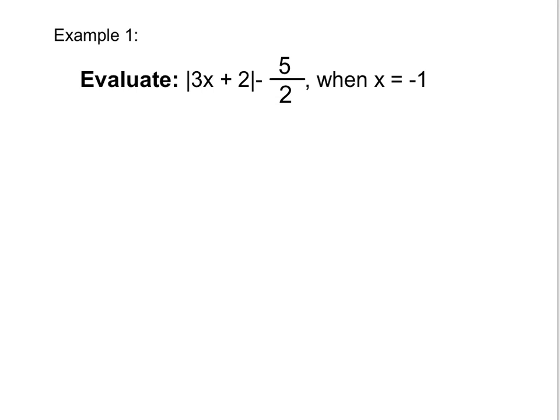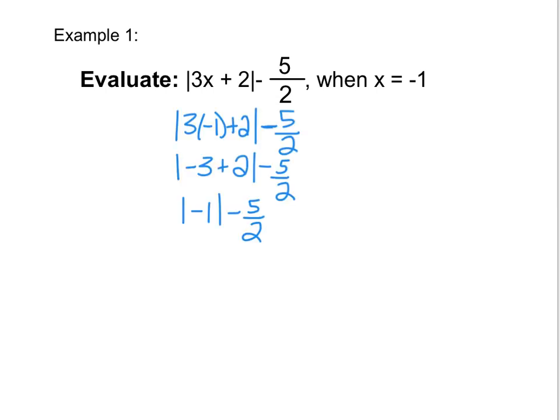In this case, we're told that x equals negative 1, so I'll start by substituting that in. Now that I've simplified everything inside my absolute value, I have the absolute value of negative 1, which I know is 1, because negative 1 is 1 unit away from zero. So I have 1 minus 5 over 2, which gives me negative 3 over 2. Students often think that the answer to an absolute value problem has to be positive, but notice that our answer is negative 3 over 2.